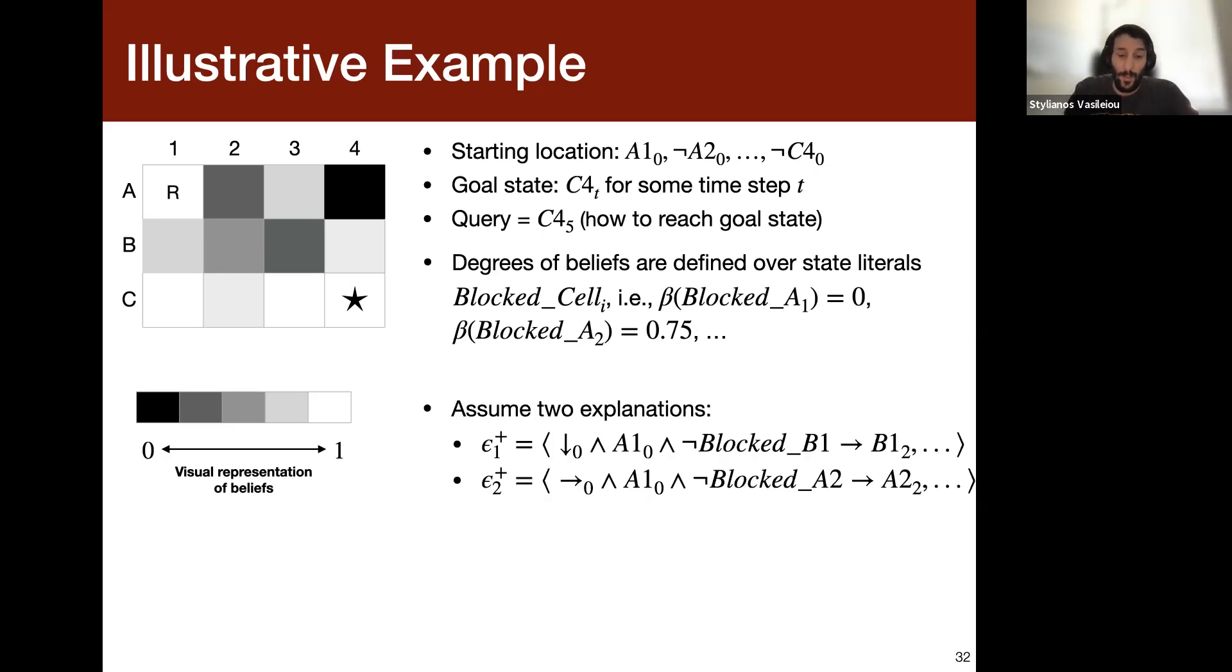Now, assume the human user doesn't know anything else, so we have to explain basically the plans. So assume we have two explanations. So epsilon one is basically the plan that you have to go down, down, and then right, right, right, and epsilon two is the explanation of the plan to go right, right, right, and then down to reach the goal state. So now, if we have these things, you can see that epsilon one, if we update the human's knowledge base, will be the most probable one. And thus, that may be also the most convincing to a human user. So that's our main hypothesis and motivation for this work.